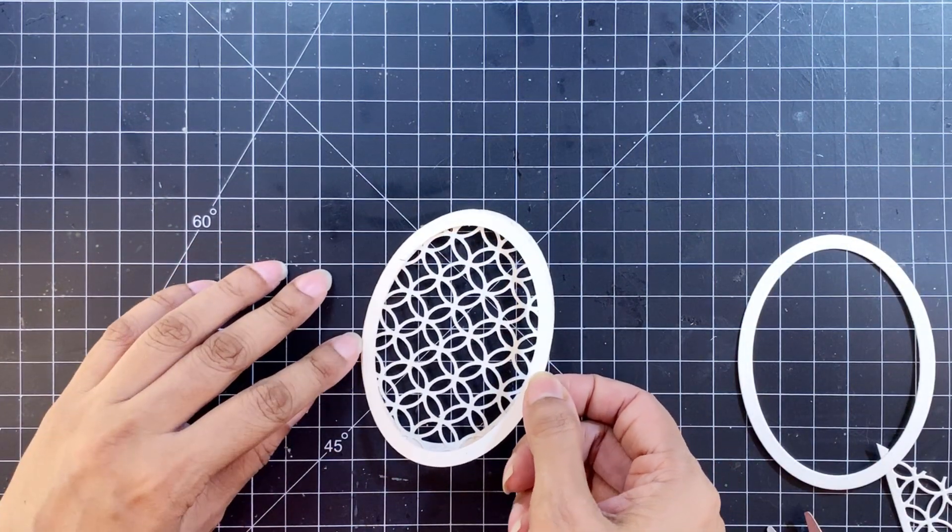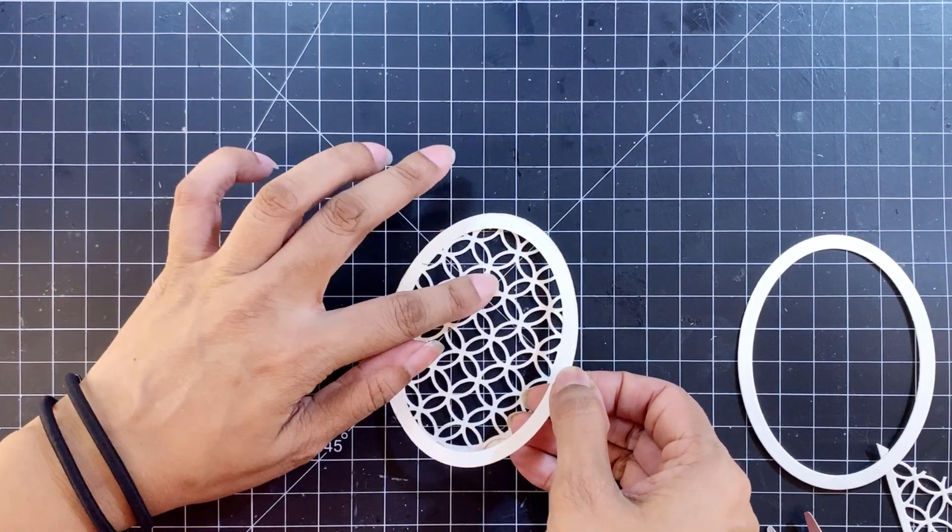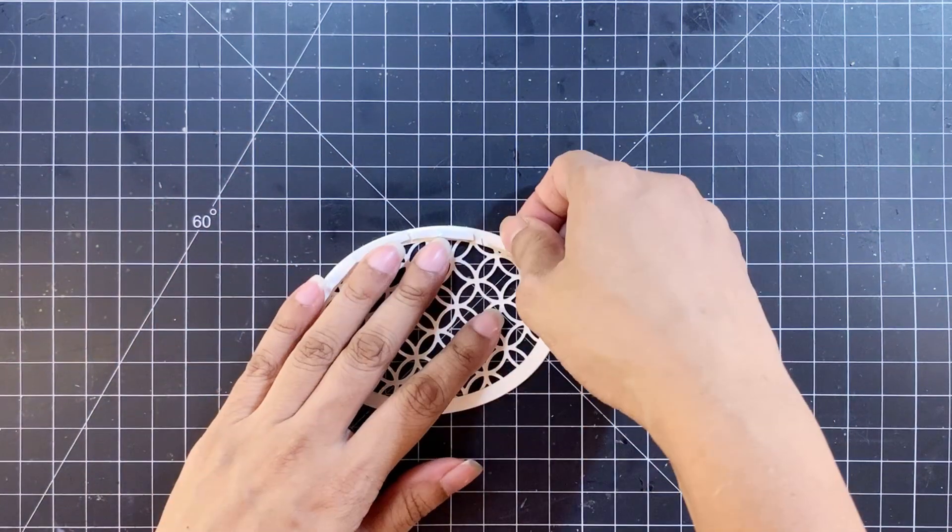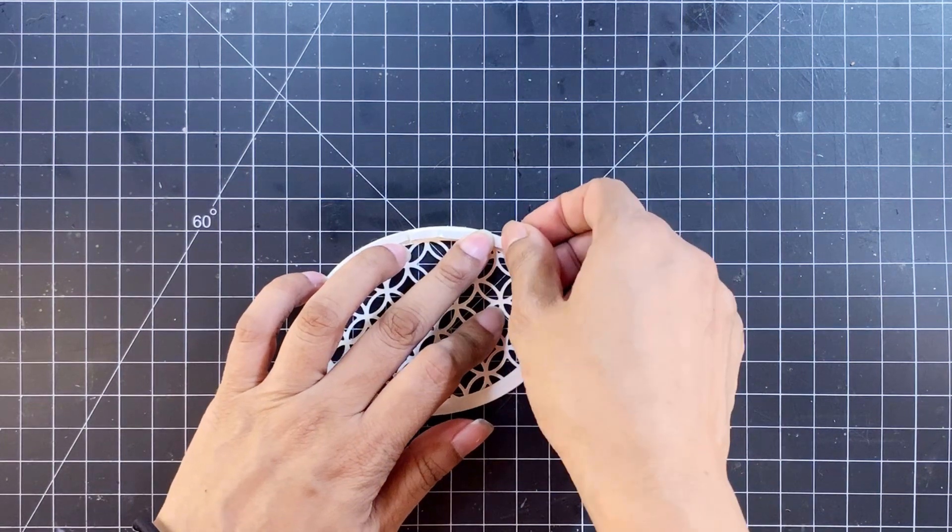Next I'll snip off the excess and adhere the remaining oval behind it to make the frame a bit more sturdy.